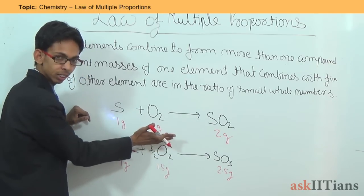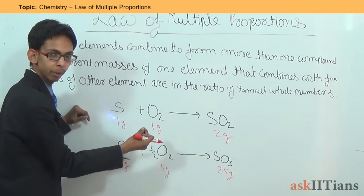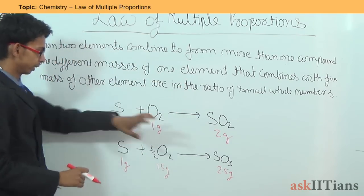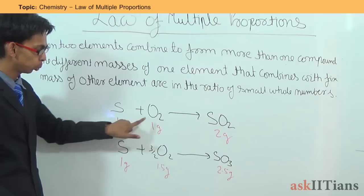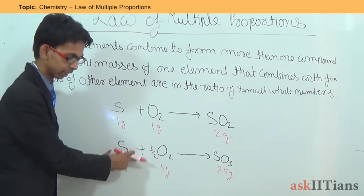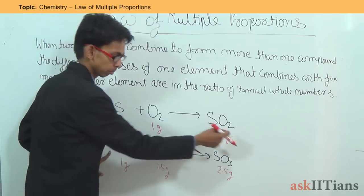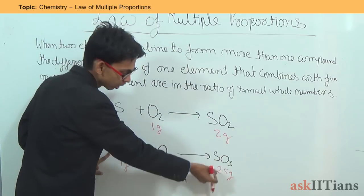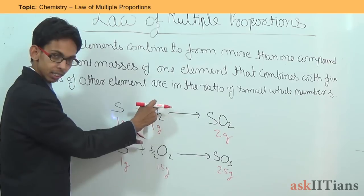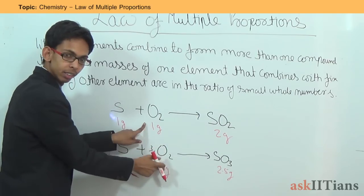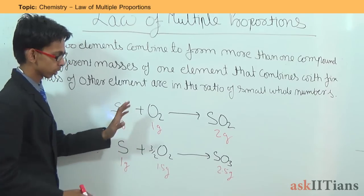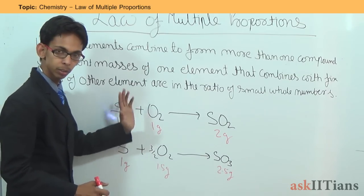The masses of oxygen in the two different reactions should be in a simple whole number ratio, as stated by the law of multiple proportions. When two elements combine in two different reactions to form two or more different compounds, the different masses of the element combining with the fixed mass of the other element are always in the ratio of small whole numbers.